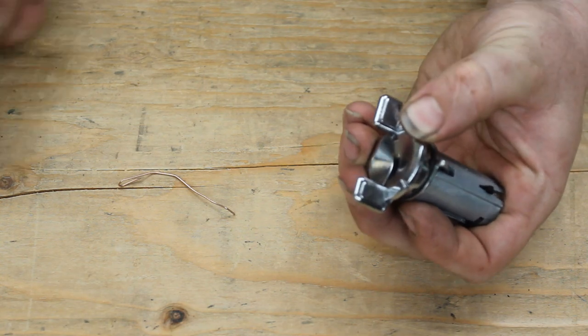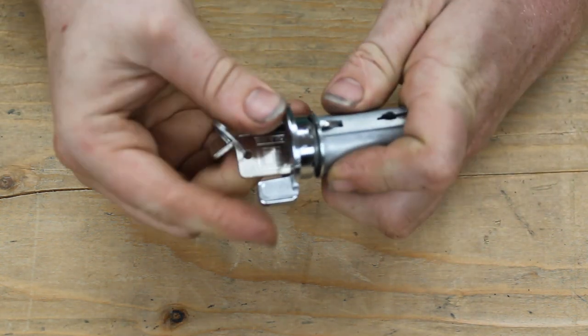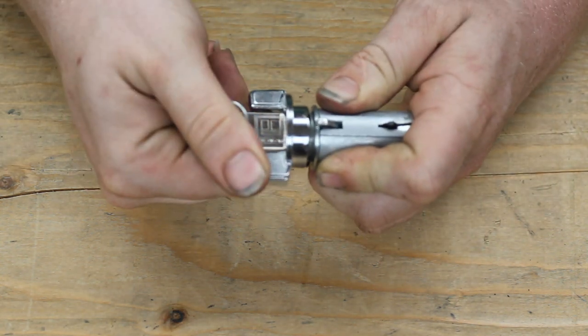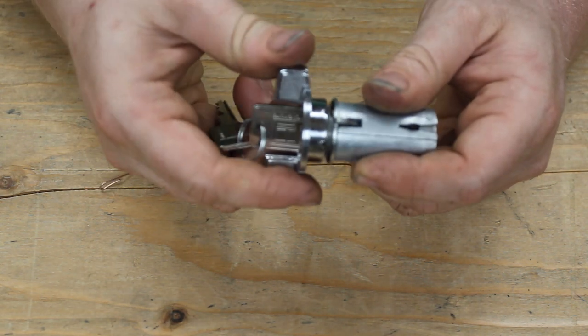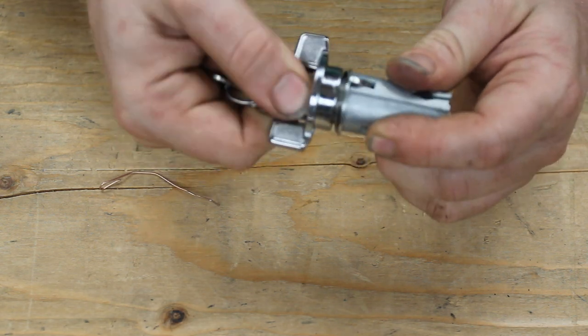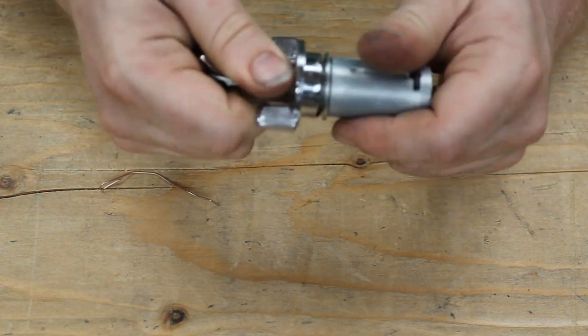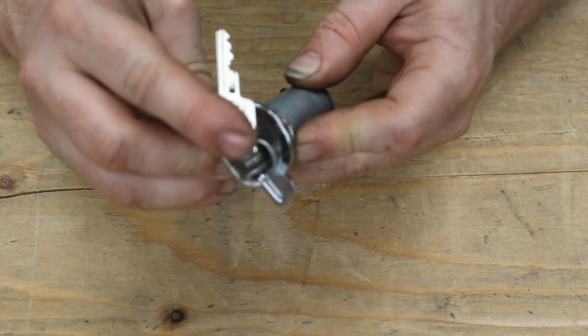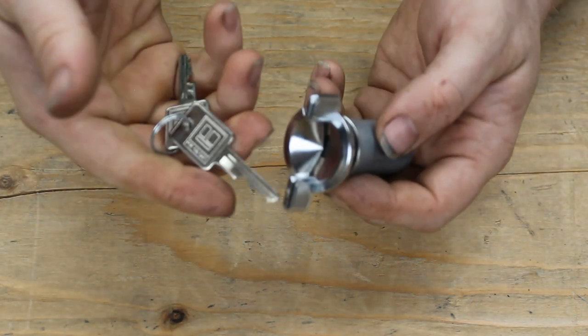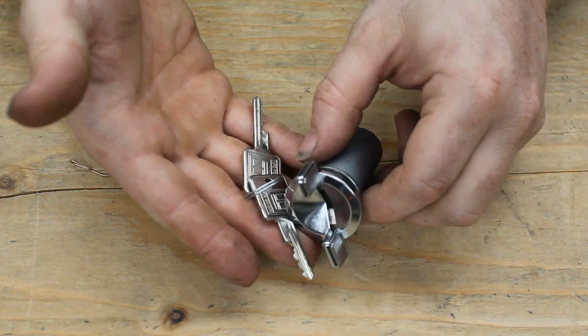Take your new key, put it back in, twist it, and it's locked back together. And we're going to accessory. We'll be in lock. Are we accessory, or are we in lock? Let's take a look here. Accessory. And there we go. And it pops out like that.